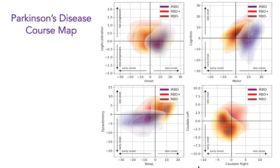We then represented the individual parameters of patients from the PPMI cohort tracking Parkinson's disease, differentiating patients based on their rapid eye movement sleep behavior disorder (RBD). Without further interpretation, we see from the different distributions that different RBD status implies different individual parameters and thus different disease progressions.